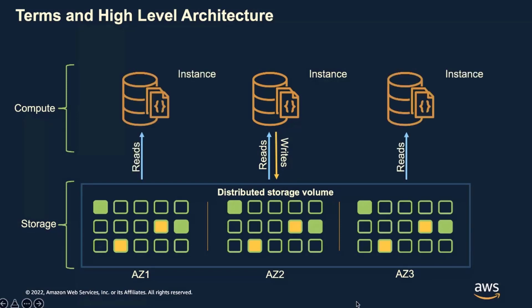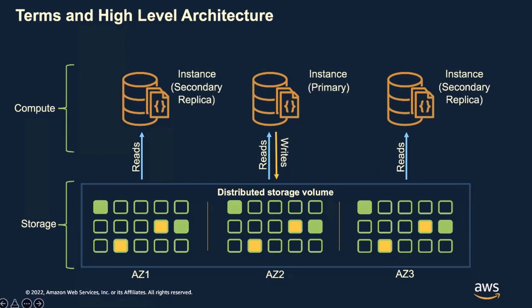Every time you do a write, it replicates your data six ways across three different availability zones for high durability and high availability. A collection of instances with its cluster volume is known as a cluster. When you have more than one instance, one is the primary and all others are known as secondary replicas. The primary can do both reads and writes, while secondary replicas can only do reads.